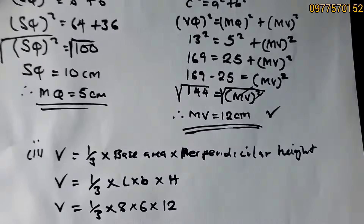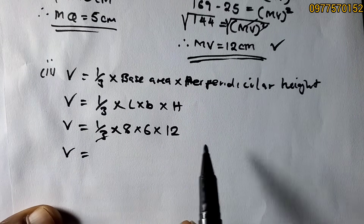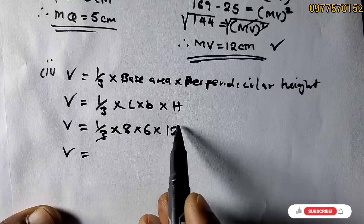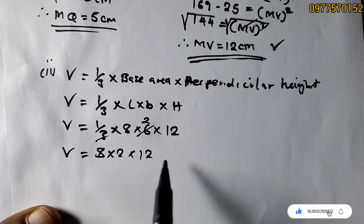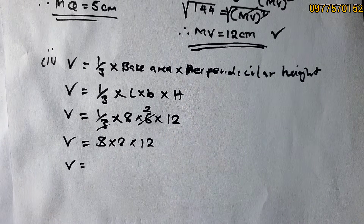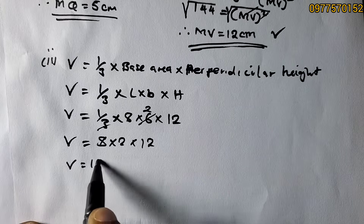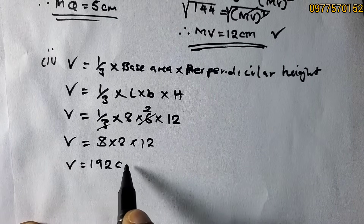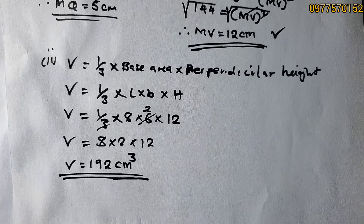Simplifying: 3 goes into 6 twice, so we have 8 × 2 × 12. Using a calculator — this is Mathematics Paper 2 — 8 × 2 × 12 = 192. Therefore the volume is 192 cubic centimeters. That is the final answer.